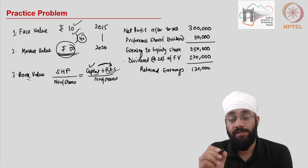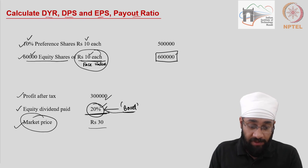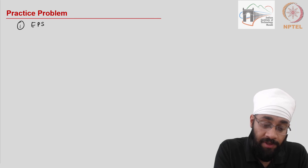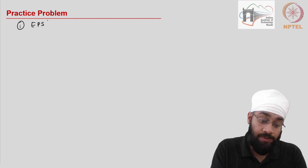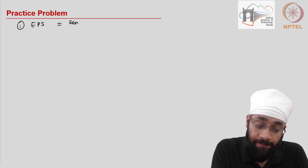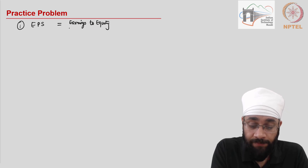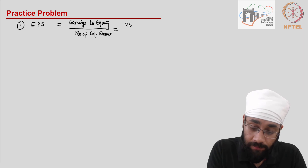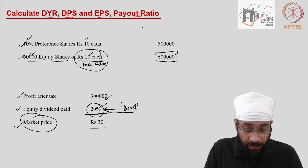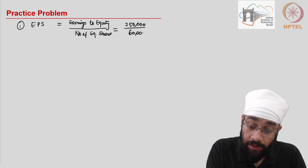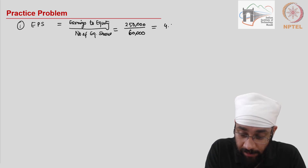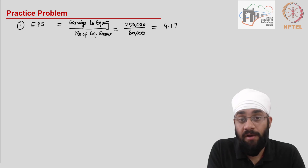Now we calculate the four ratios. First, earnings per share (EPS) equals earnings available to equity shareholders divided by number of equity shares. Earnings to equity is 2,50,000 divided by 60,000 equity shares, which gives approximately rupees 4.17 per share.